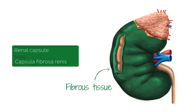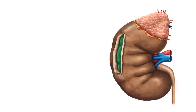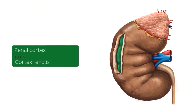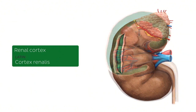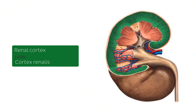From the renal capsule, we're going to move on to our next structure found a little bit below — this is known as the renal cortex. The renal cortex is the outer layer of the kidney, and if I were to cut a bit of the kidney, you can expose the renal cortex seen here highlighted in green. This layer is approximately six millimeters thick and is situated between the renal capsule and the medulla.